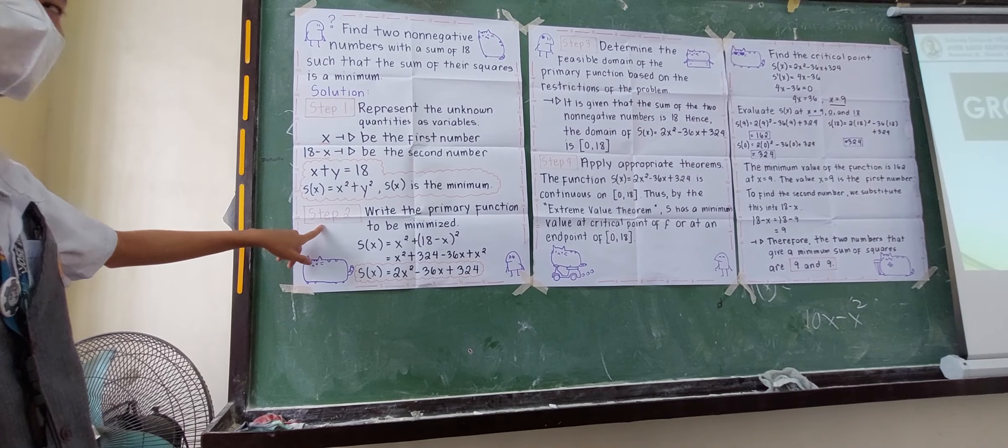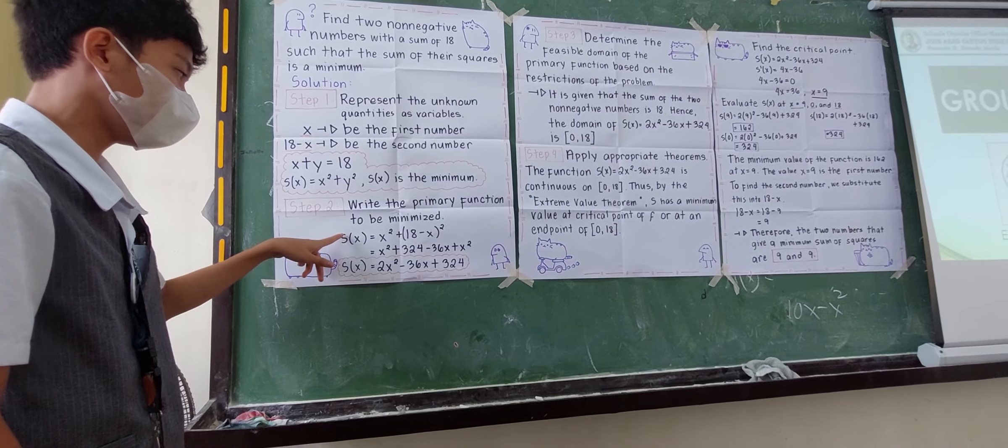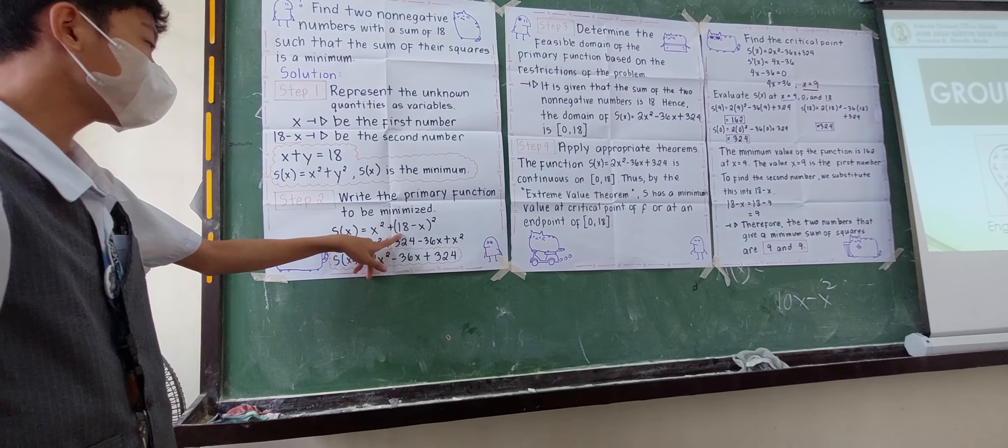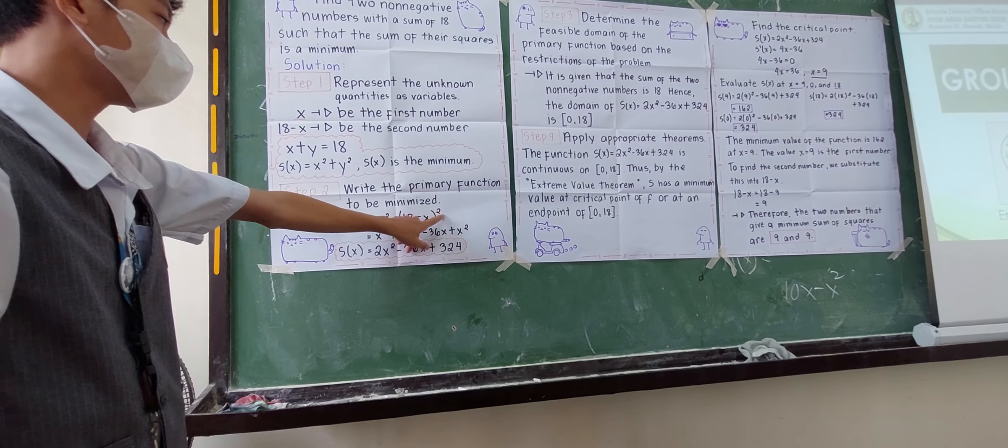For step 2, write the primary function to be minimized. So, S of X is equal to X squared plus, substitute the value of Y which is 18 minus X, raised to 2.